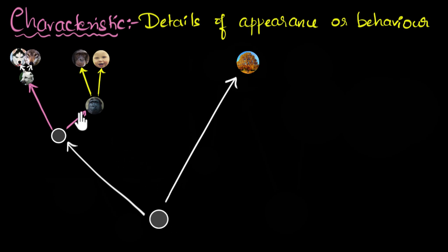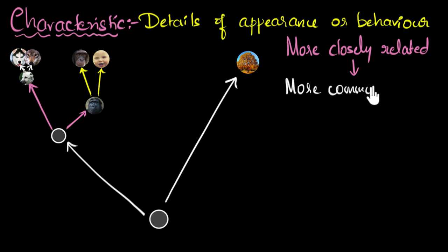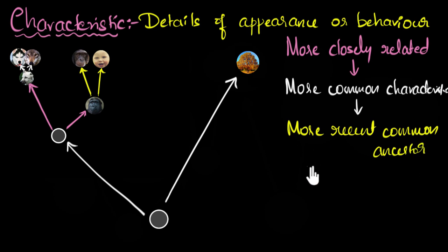You can now see the link between classification and evolution. The more closely related animals or organisms are, the more recent their common ancestors would be. To summarize: more closely related means more common characteristics, and more common characteristics means more recent common ancestor. This is evolution and classification linked together.